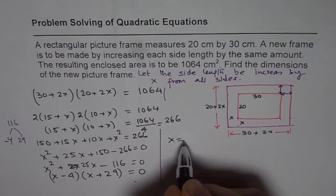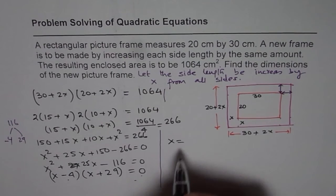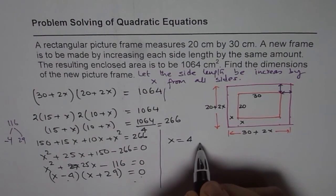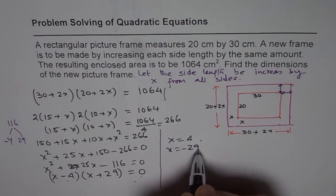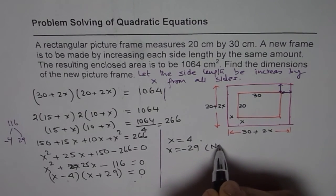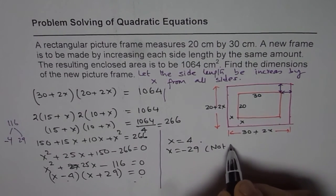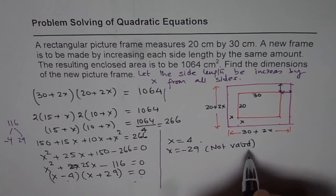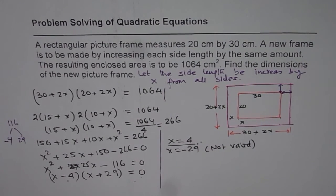Now from here, we get two values of x. One is x equals 4, that will give me 0. The other value is x equals minus 29. Now that is not valid. We cannot have negative value for x, not valid. So the only valid answer is x equals 4.